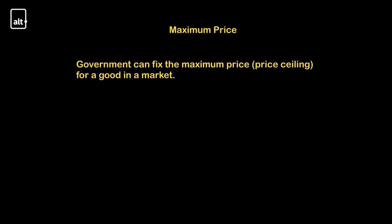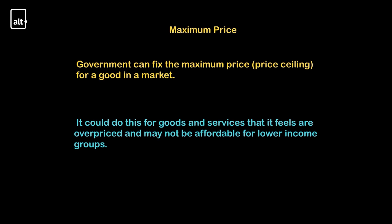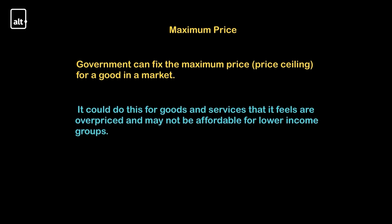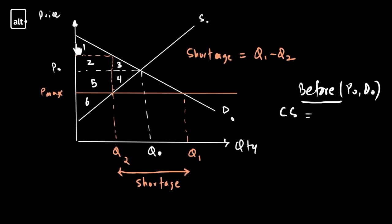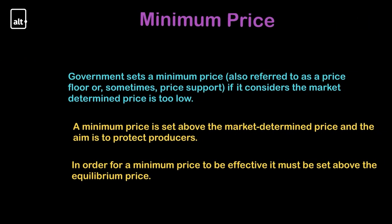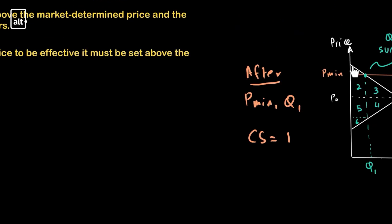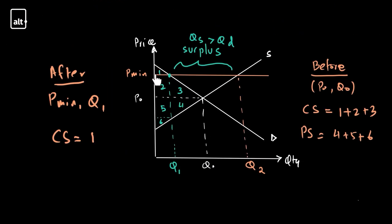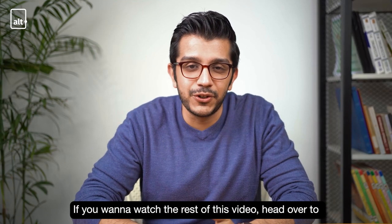It could do this for any good and service that it feels is overpriced. Consumer surplus is the area under the demand curve above the market price. What kind of industries get a minimum price? The area under the demand curve above the price is only area one.